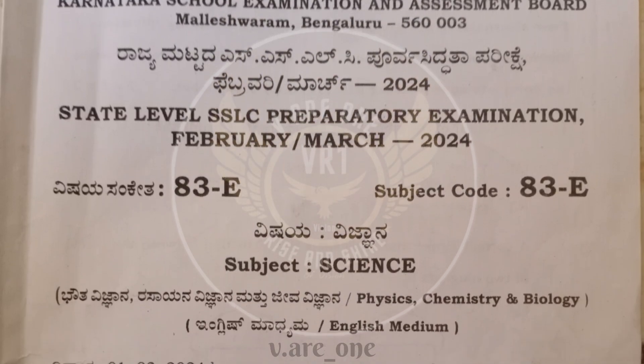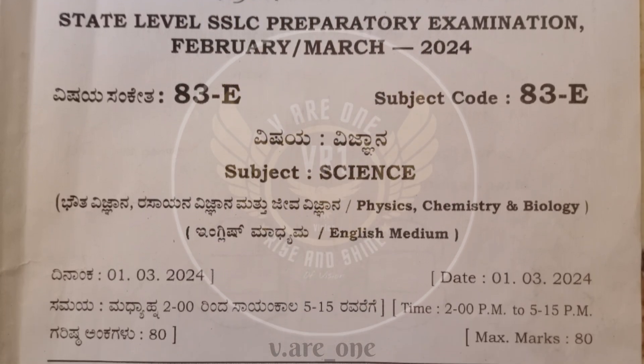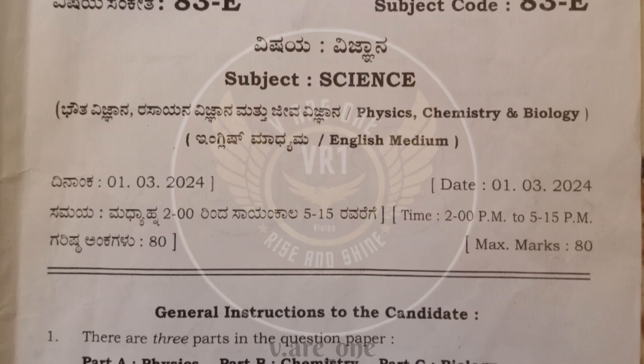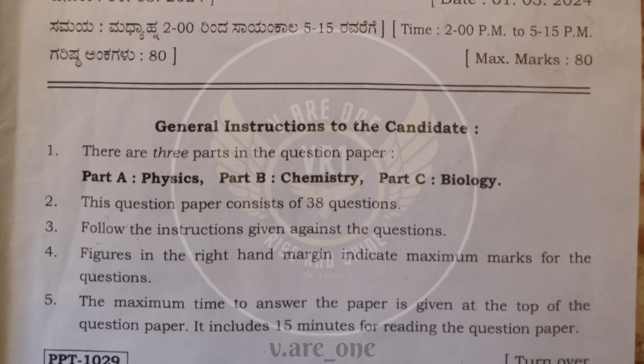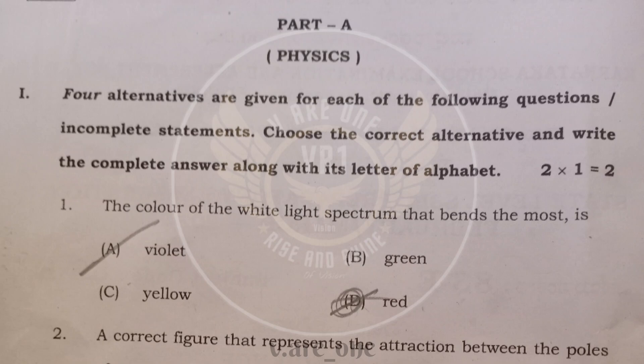Welcome to our channel. Let us discuss about state level or SSLC preparatory examination of science. First main multiple choice question. First question is the color of the white light spectrum that bends the most, and the answer is option A, violet.